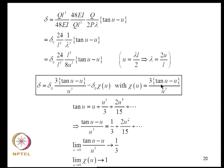As U → 0 (P → 0), χ(U) should go to 1 so that δ → δ₀. This can be verified by expanding tan U in a Taylor series and rearranging — χ(U) → 1 as U → 0, which is as expected.